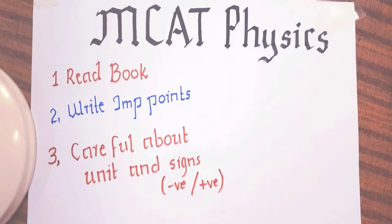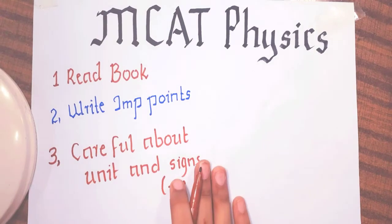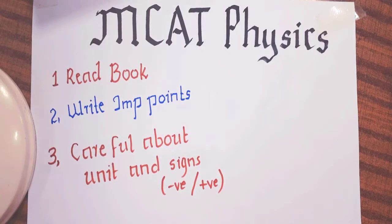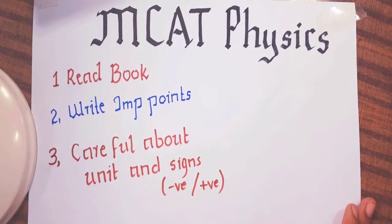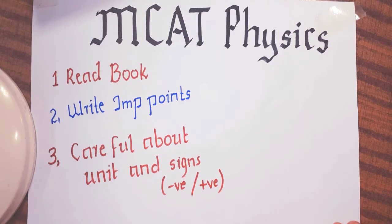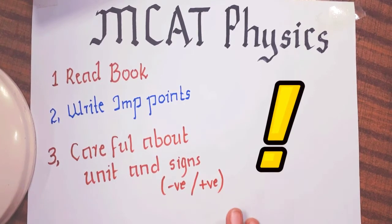Now the third thing which is very very important regarding physics, which is our third tip: be careful about unit and signs. In MCQs, you can be confused easily by units. Like for example, one calorie is equals to how many joules. Even simple things like kilometer, meter, decimeter - in units you can be easily confused.